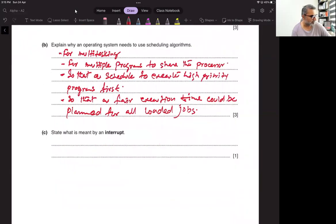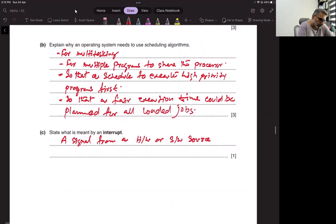What is meant by an interrupt? You would have already been learning about interrupts since all levels. So interrupt is a signal from a hardware or software source that requires the attention of microprocessor.